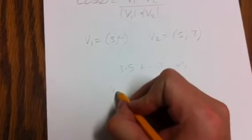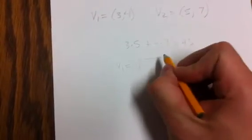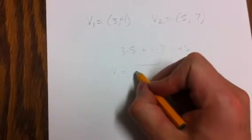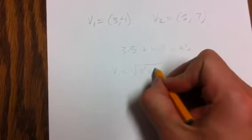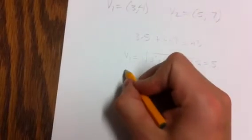And now to find the magnitude of V1, we simply take the square root of both of the components squared, so 3 squared plus 4 squared equals square root of 25, which is equal to 5.